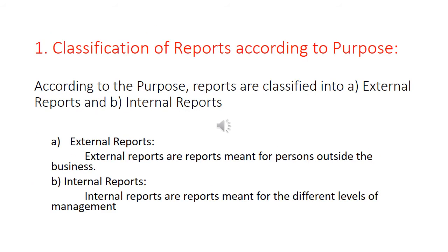The first classification is according to purpose. According to purpose, we have two types: external reports and internal reports. External reports are those meant for persons outside the business, such as external stakeholders like suppliers, financial institutions, banks, and customers. Internal reports are those meant for different levels of management — top level, middle level, and lower level management.